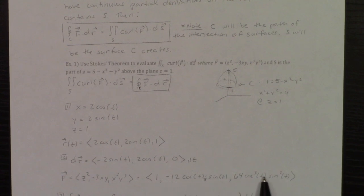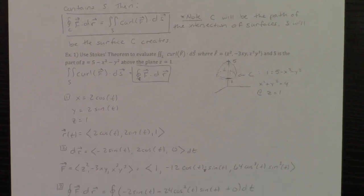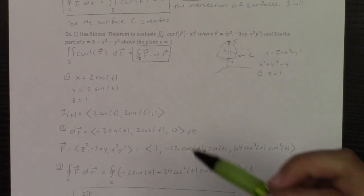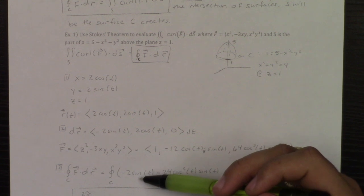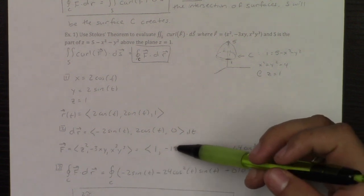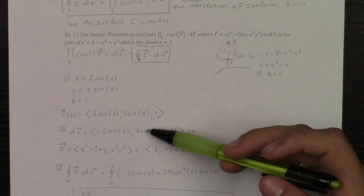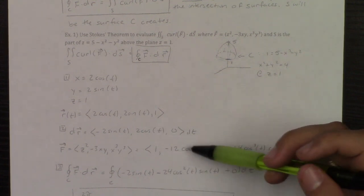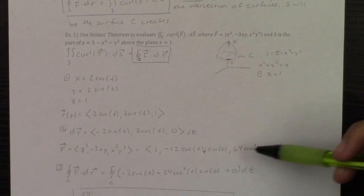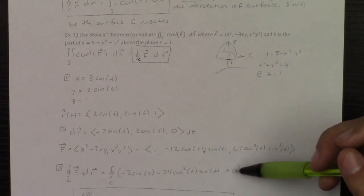And now that I have F in terms of T, if I do F dotted with dr, write 1 times that negative 2 sine T is negative 2 sine T. And then negative 12 cosine T times sine T times a 2 cosine T is your minus 24 cosine squared T times sine T. And then all of that times 0, thank God, it's just 0.